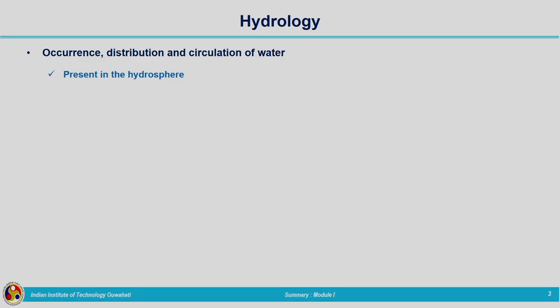We started with the definition of hydrology — it is nothing but the occurrence, distribution, and circulation of water. Water is present from 1 kilometer into the ground in the lithosphere to 15 kilometers above into the atmosphere, and that is what is known as the hydrosphere. Water is present in the hydrosphere in different forms: liquid, solid, or vapor form.